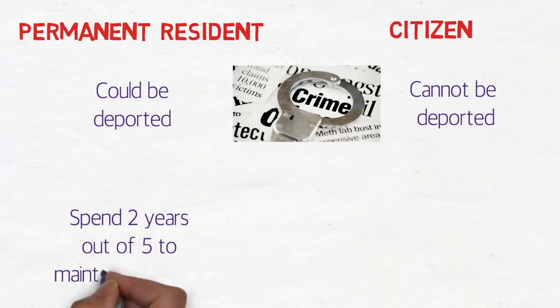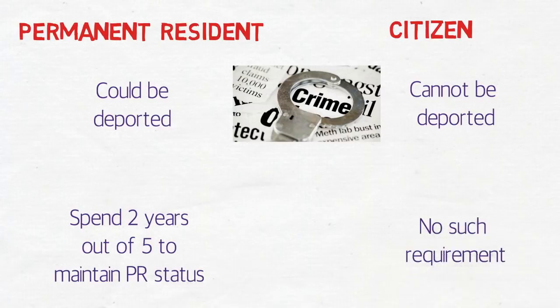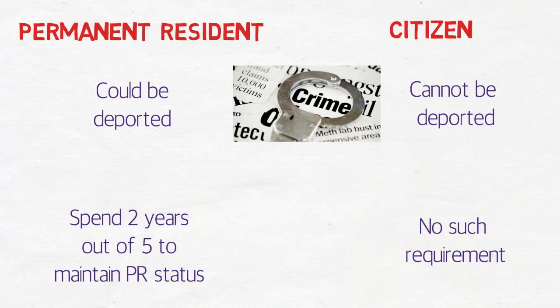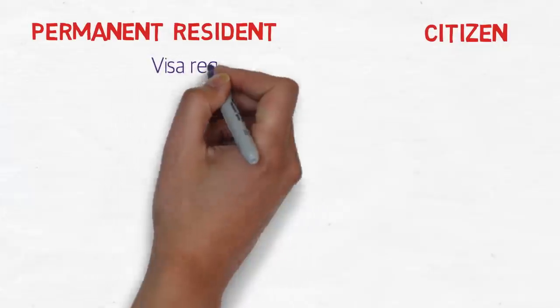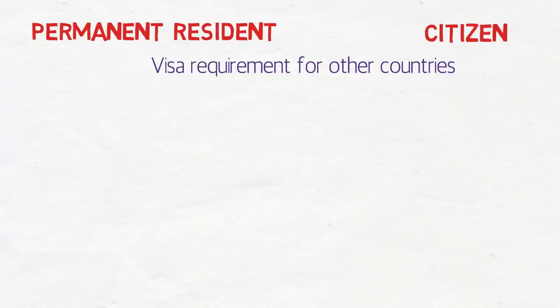As a permanent resident, you need to spend two years out of five to maintain your PR status. There's no such requirement as a citizen — if you're a citizen of Canada or Australia, you can live and work anywhere in the world for any number of years and come back with your citizenship intact. But as a PR, if you're not there for two out of five years, you lose your PR status. To apply for Canadian citizenship, you need to be there for three years.